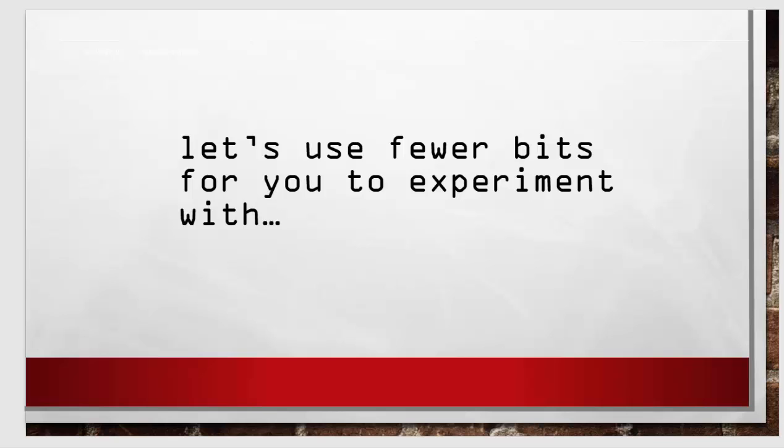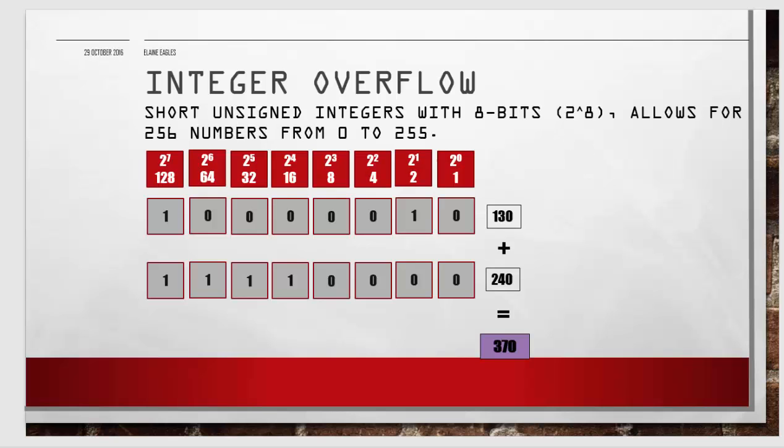Let's use fewer bits to experiment. It's easier to work with smaller bits when learning. Let's look at 8 bits, 2 to the power of 8. 130 is 128 plus 2, and 240 is all of these bits set. Add those together and that gives us 370.